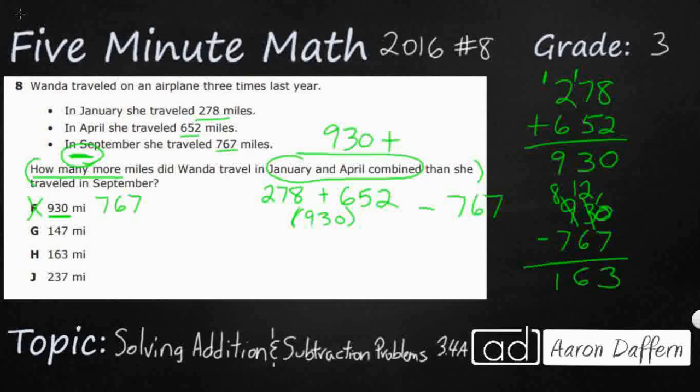And then 8 minus 7 is 1. And here we go. We have got 163, and that is going to be our answer. Now, let me show you. We already figured out how we can find 930.